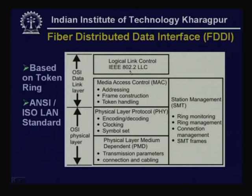The upper layers have been kept the same — the logical link control sub-layer, which is part of the data link layer, acts as an interface with the higher OSI layers such as the network layer. The 802.2 LLC is identical to that of 802.3, 802.4, or 802.5.